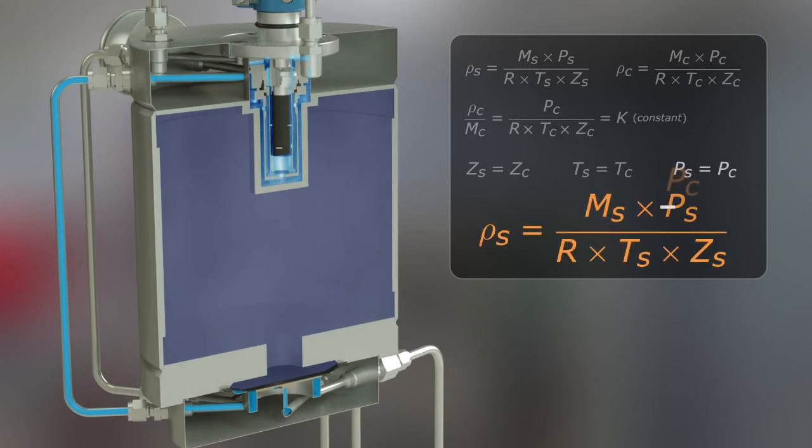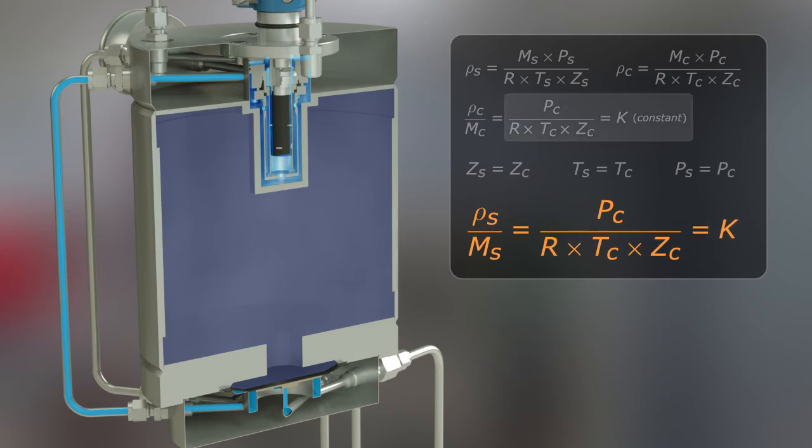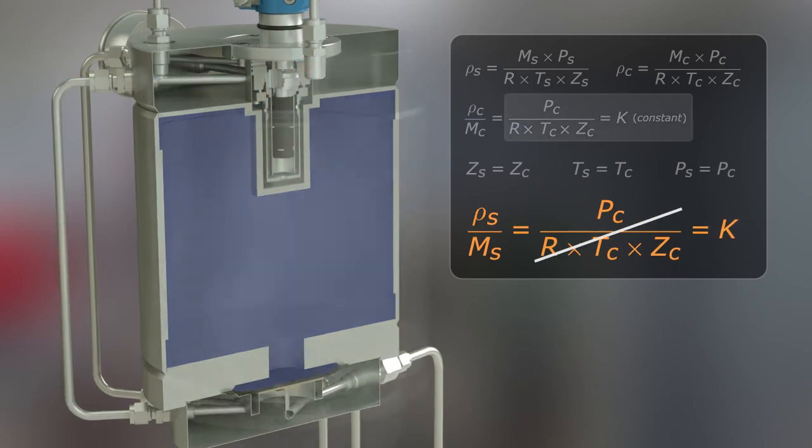With this approach, the influence of pressure, temperature, and compressibility on the sample gas has been removed, and the proportional relationship between the gas density and specific gravity mentioned earlier is achieved.